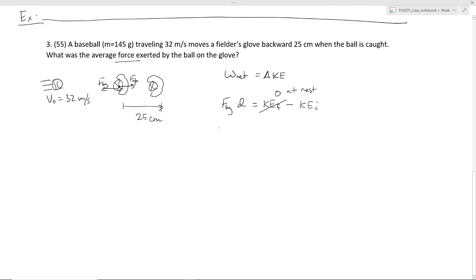So in other words, we have an expression. And notice there will be a negative sign here because the force on the ball by the glove is pointing in this way. But the displacement is this way. So we would have negative force times the distance, 25 centimeters, is going to equal negative one half mv squared.